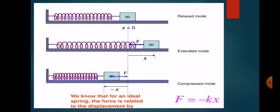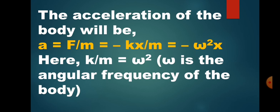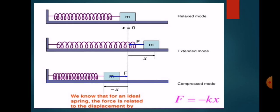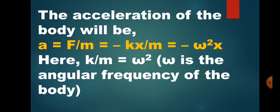If x is the displacement from the equilibrium position, for an ideal spring the force is related to the displacement by F equals minus kx, where k is the force constant. The negative sign indicates that the force and displacement are in opposite directions. So the acceleration of the body will be derived from this.